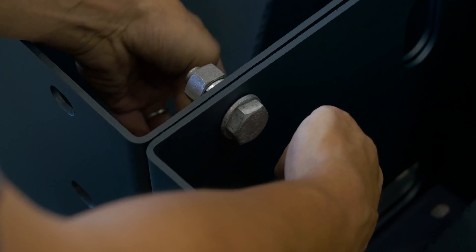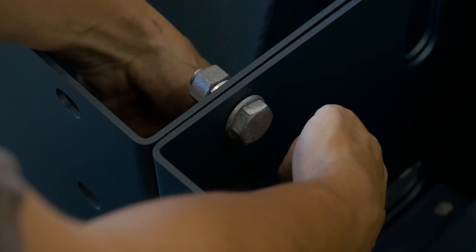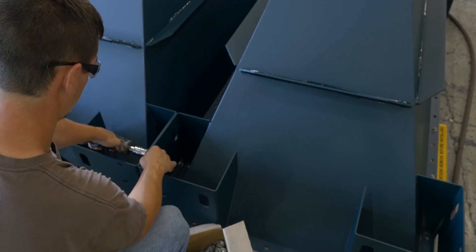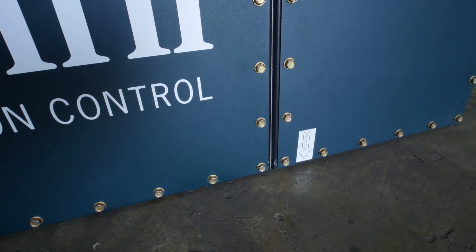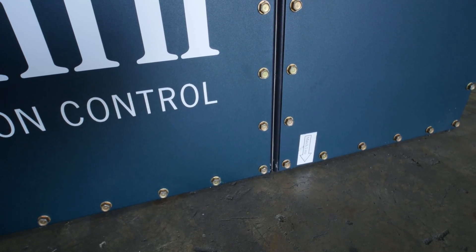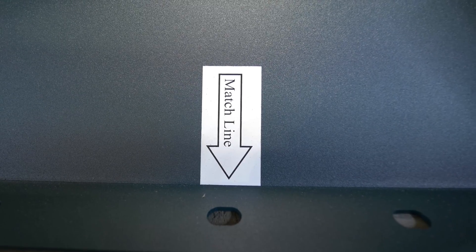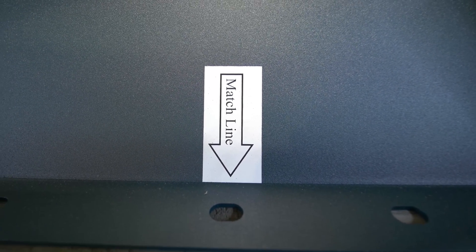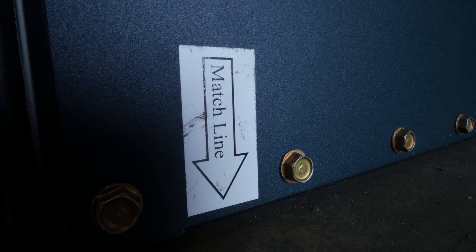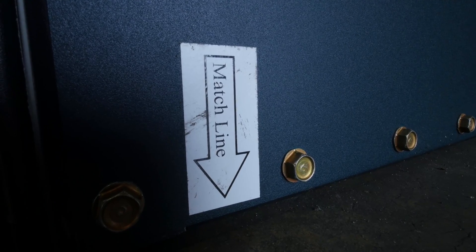On collectors that have half frames, the filter module to hopper bolt holes are not symmetrical. Match line labels are provided on the filter module and all hoppers. Turn the hopper or support structure assembly so that the match line labels on the hoppers line up with the match line labels on the filter module.